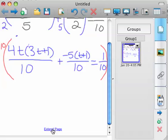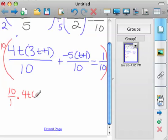you in essence have 10 over 1 times 4t times 3t plus 1 over 10. And I don't require my students to show this step,